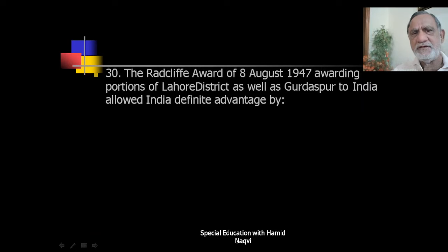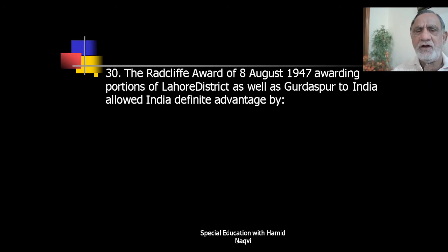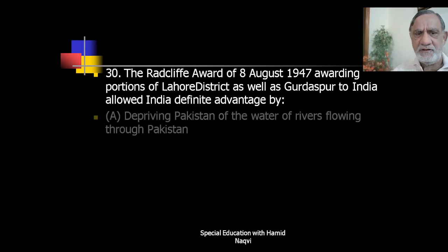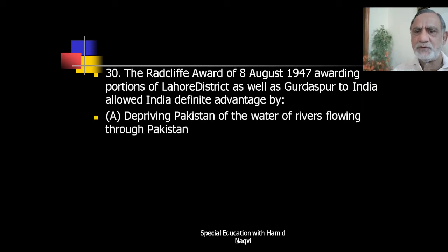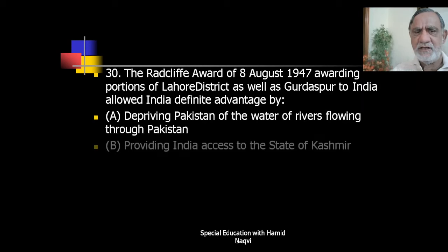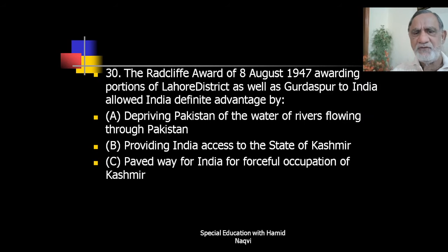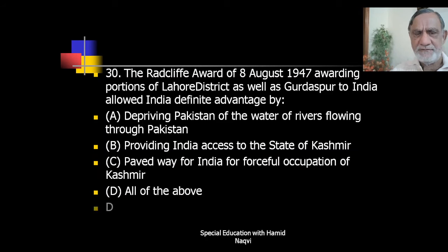The Radcliffe Award of 8 August 1947 awarding portions of Lower District as well as Gurdaspur to India allowed India a definite advantage by depriving Pakistan of water of rivers flowing through Pakistan, providing India access to the state of Kashmir, and paving the way for India's occupation of Kashmir. The correct answer is all of the above.